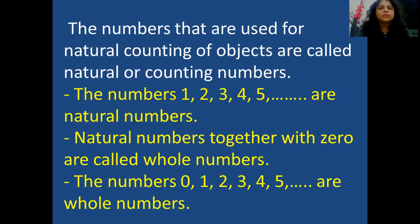The numbers that are used for counting of objects are called natural counting numbers. The numbers 1, 2, 3, 4, 5 and so on are natural numbers.